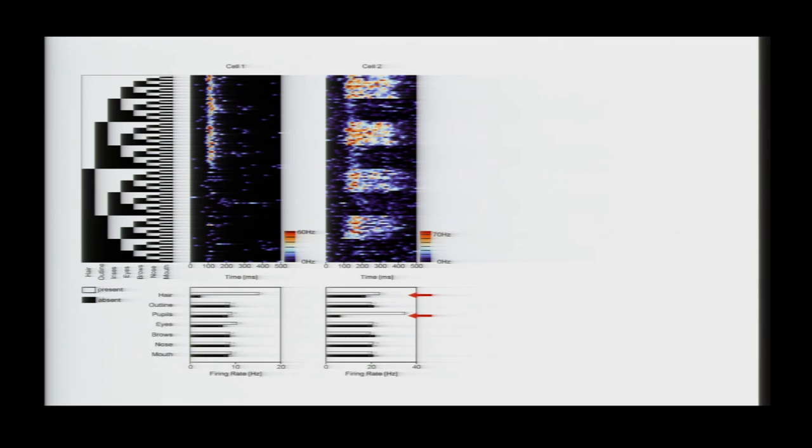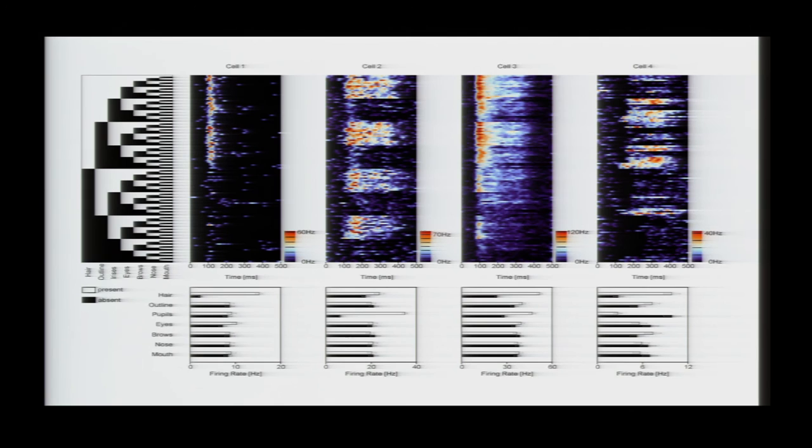And so, we can represent each of these stimuli as this string of seven bits, and here you can see the response of one example neuron to these 128 stimuli. And you can see that this cell was very selective for the presence of hair, which were the first 64 stimuli. And here's a neighboring cell, which was very selective for the presence of irises, and also for hair at short latencies. And here are two more cells with more complex selectivity patterns. So, the basic story seems to be that different cells are integrating different constellations of face parts to detect a face.